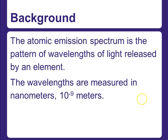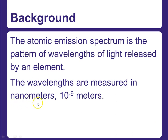The atomic emission spectrum is the pattern of wavelengths of light released by an element, and the measurement for wavelength is in nanometers, which are 10 to the minus 9 meters — so billionths of a meter.